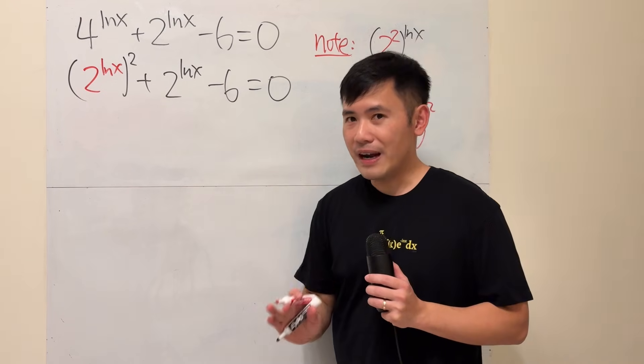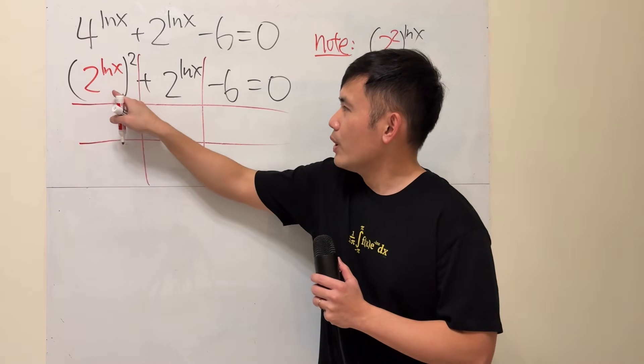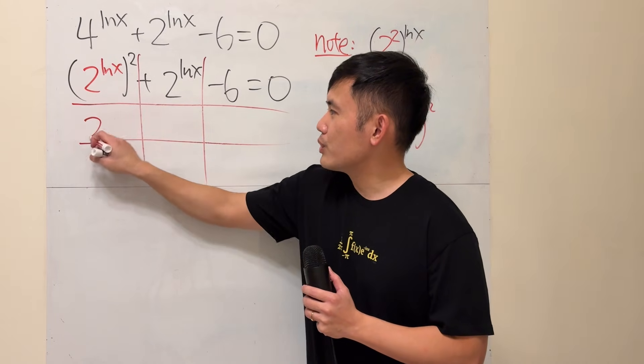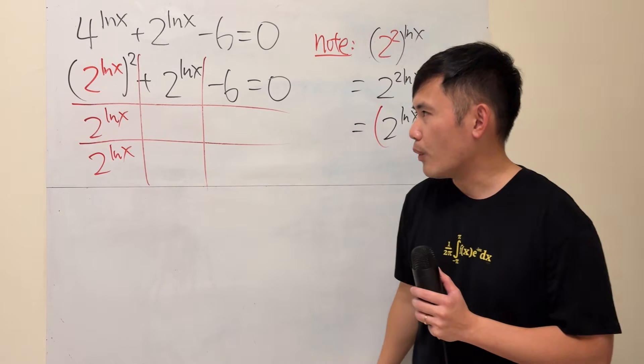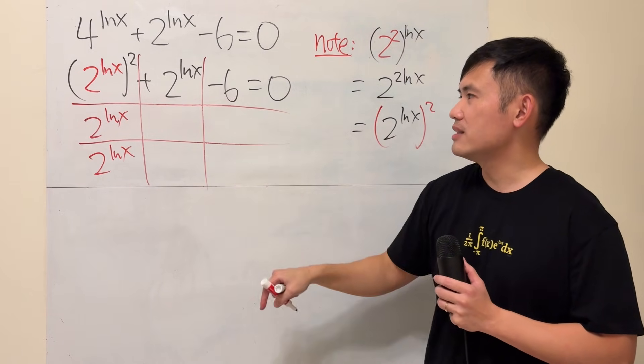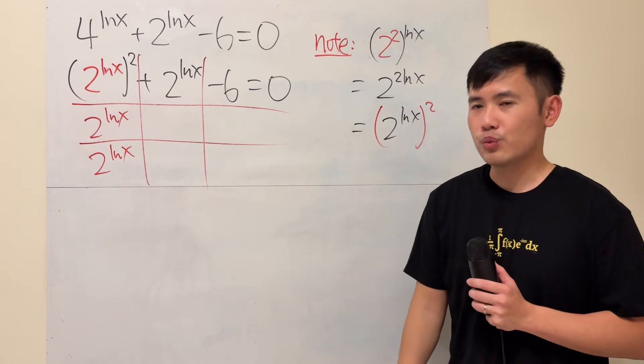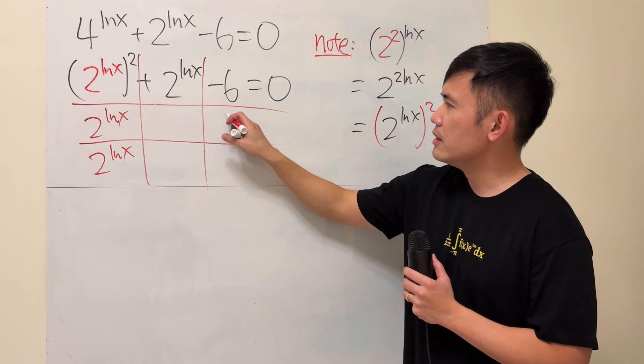Right here, I will factor it for you guys. I will factor it with the tic-tac-toe method to make it super clear. So, what times what gives us 2 ln x squared? Well, it's just 2 to the ln x power times 2 to the ln x power. And then, what times what gives us negative 6? Together, they add up to 1. The coefficient right there is 1. I'm going to use 3 and negative 2.